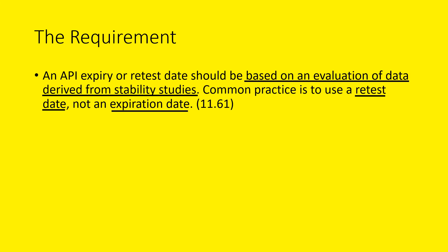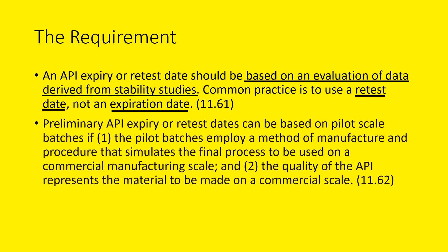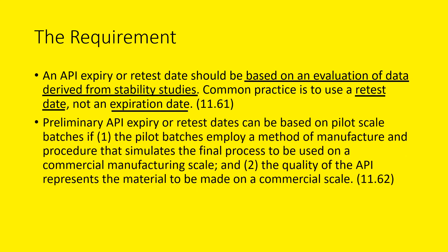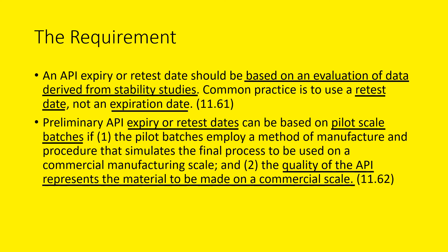Let us see how the API expiry date or retest date is provided. Preliminary API expiry or retest dates can be based on pilot scale batches, if the pilot batches employ a method of manufacture and procedure that simulates the final process to be used on a commercial manufacturing scale, and the quality of the API represents the material to be made on a commercial scale. So the expiry date or retest date is assigned based on data from a pilot scale, provided the quality of the pilot batches should be equivalent to the quality of the commercial scale.